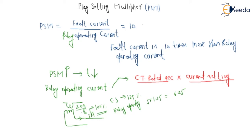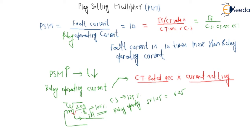So PSM equals fault current IF. Since we are taking the ratio, the fault current must be on the secondary side, so we use IF divided by CT ratio to get the secondary side current. The relay operating current is CT secondary into current setting. Therefore, PSM equals IF divided by (current setting × CT secondary × CT ratio).